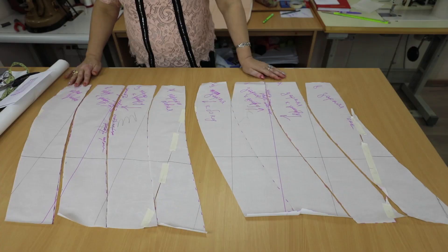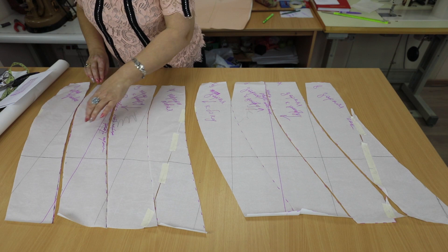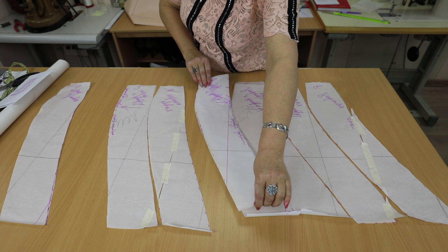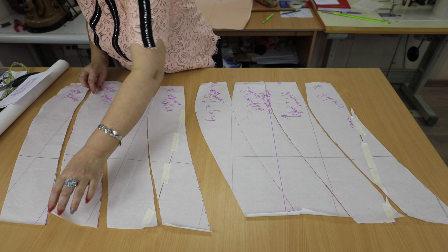We draw the line just one time, and then we just transfer it to the next gores. The lines should be equal. If we draw each line, they won't be the same.